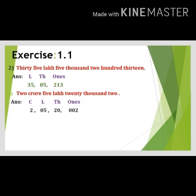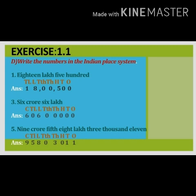Question number five: two crore, five lakhs, twenty thousand, two. First mark the periods — ones, thousands, lakhs, crore. In the crore place write two. In the lakhs period there are two place values: ten lakhs and lakhs — put zero in ten lakhs and five in lakhs. In thousands they give twenty, so write twenty. Hundreds and tens are not given, so write zero zero. In the ones place write two. The number is: 2 comma 05 comma 20 comma 002.